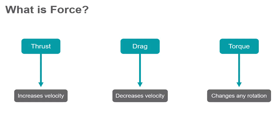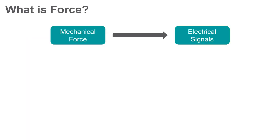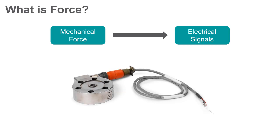A load cell is a transducer that converts mechanical force into electrical signals. There are many different types of load cells that operate in different ways, but the most commonly used load cell today is the strain gauge load cell.